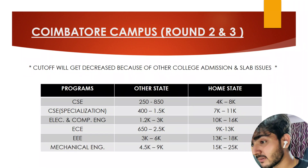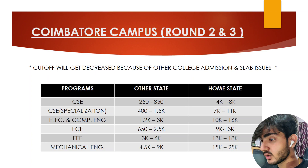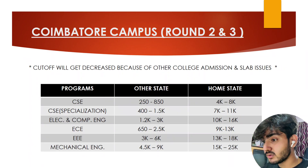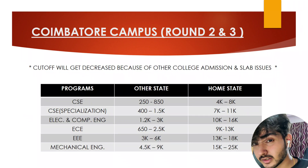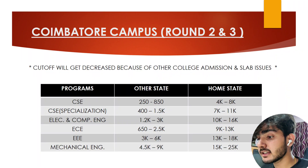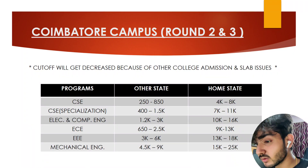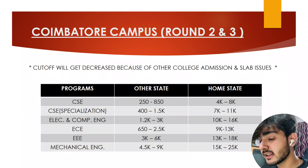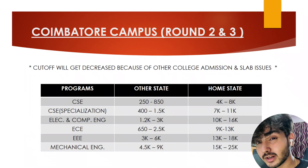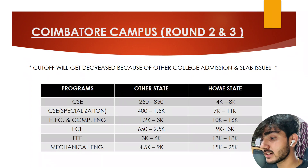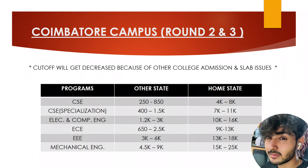For CSE specializations, the home-state rank is 7,000 to 11,000. For Electronics and Computer Engineering, other-state is 1,200 to 3,000 and home-state is 10,000 to 16,000. For Electronics and Communication Engineering, other-state is 650 to 2,500 and home-state is 9,000 to 13,000. For Triple EE, other-state is 3,000 to 6,000 and home-state is 13,000 to 18,000. For Mechanical Engineering, other-state is 4,500 to 9,000 and home-state is 15,000 to 25,000.